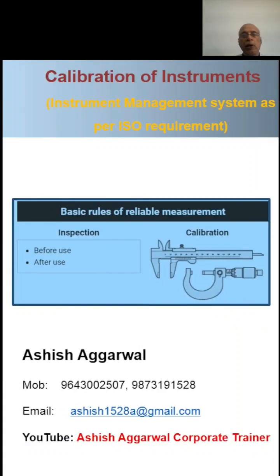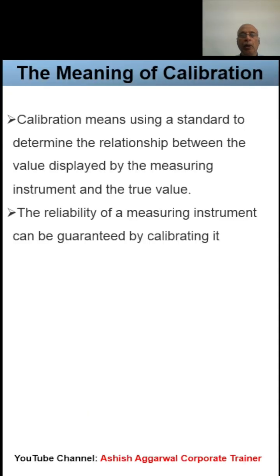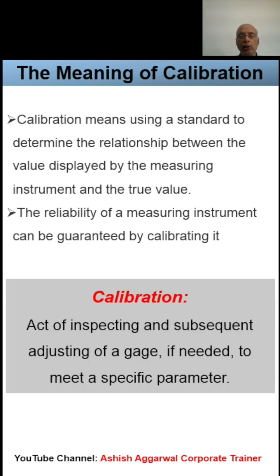Instruments are required as per the ISO requirement for instrument management system. Calibration means using a standard to determine the relationship between the actual value displayed by the measuring instrument and the true value. The reliability of the instrument can be ensured by calibrating it. Calibration is an act of inspection and subsequent adjustment of the gauge if it is required to meet a specific parameter.